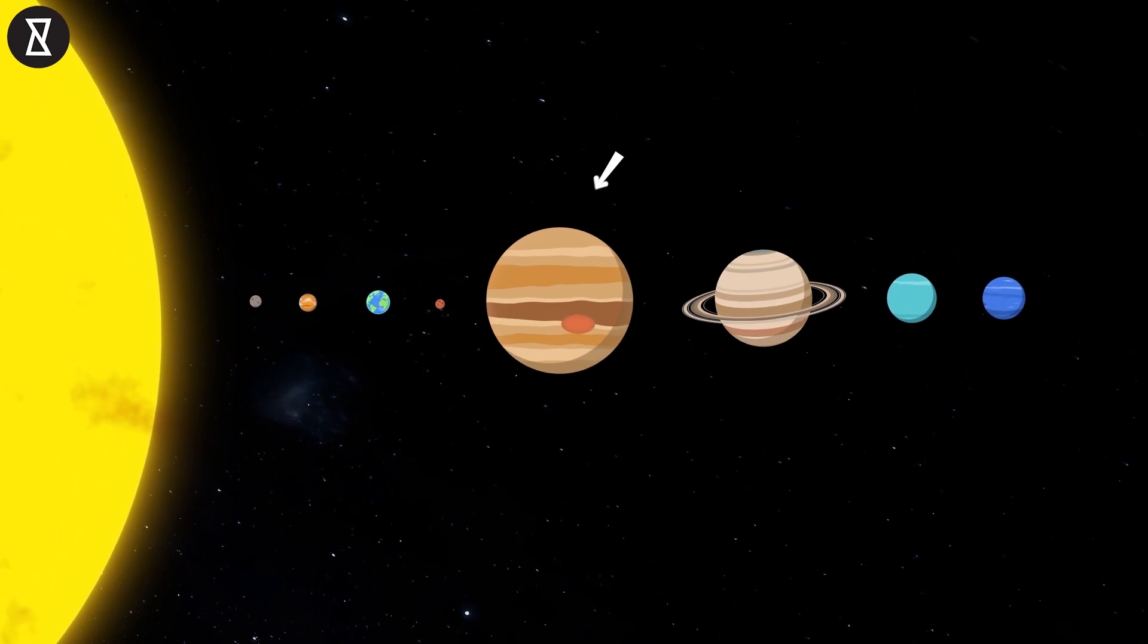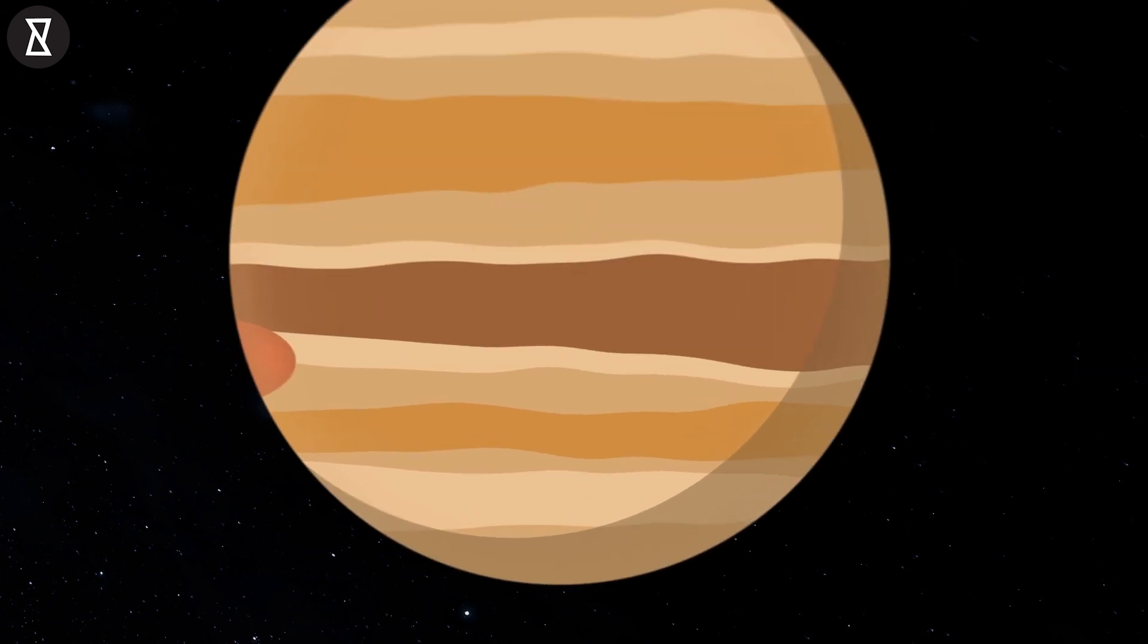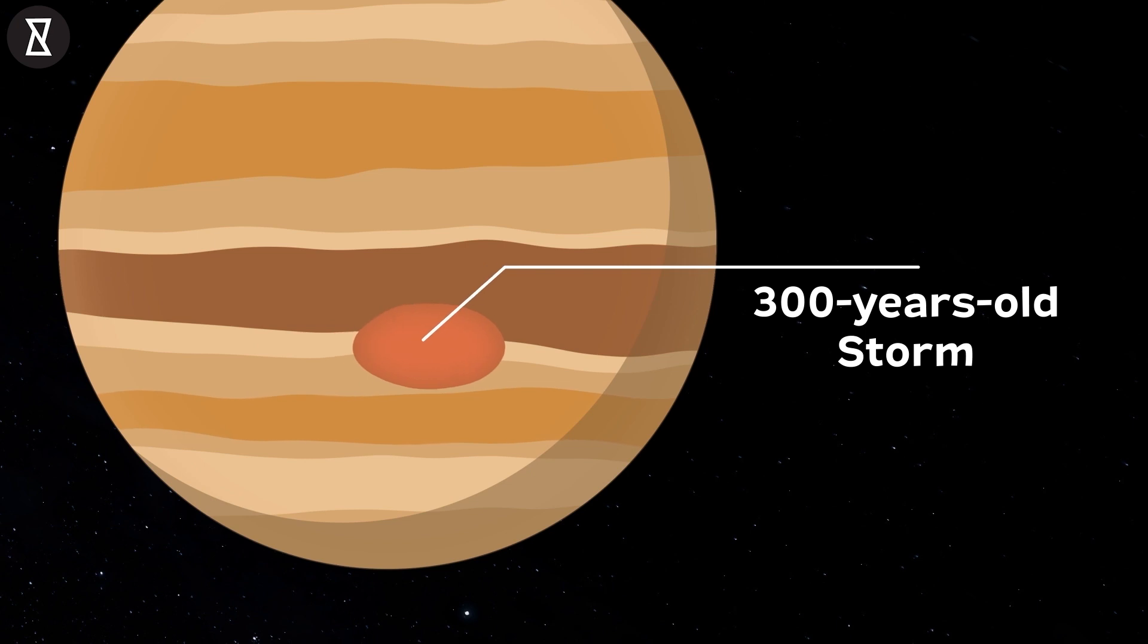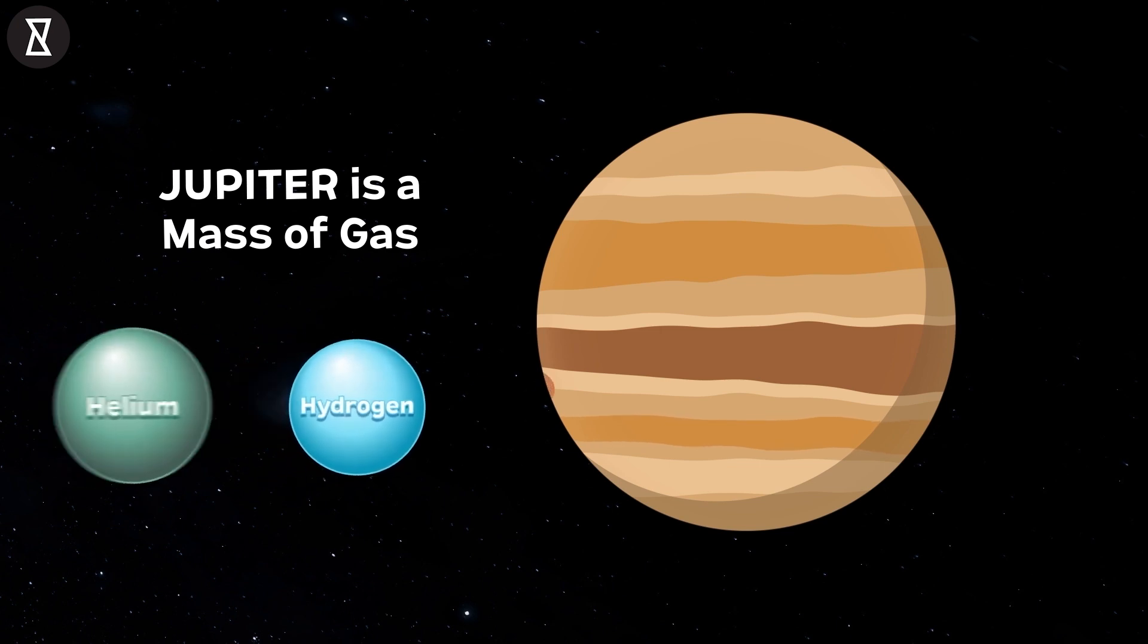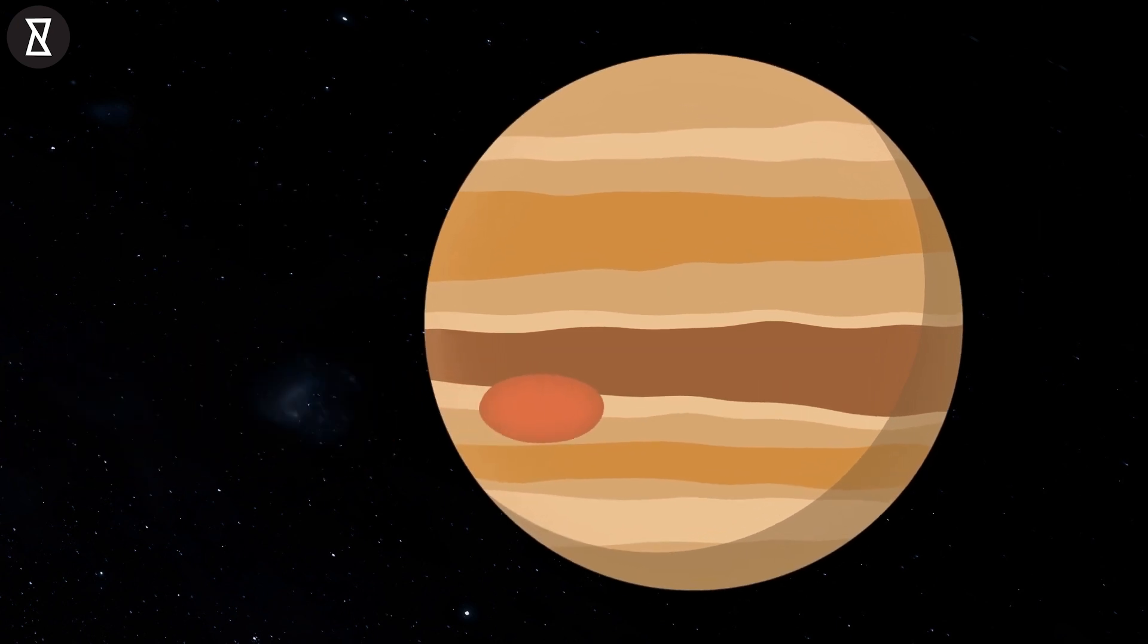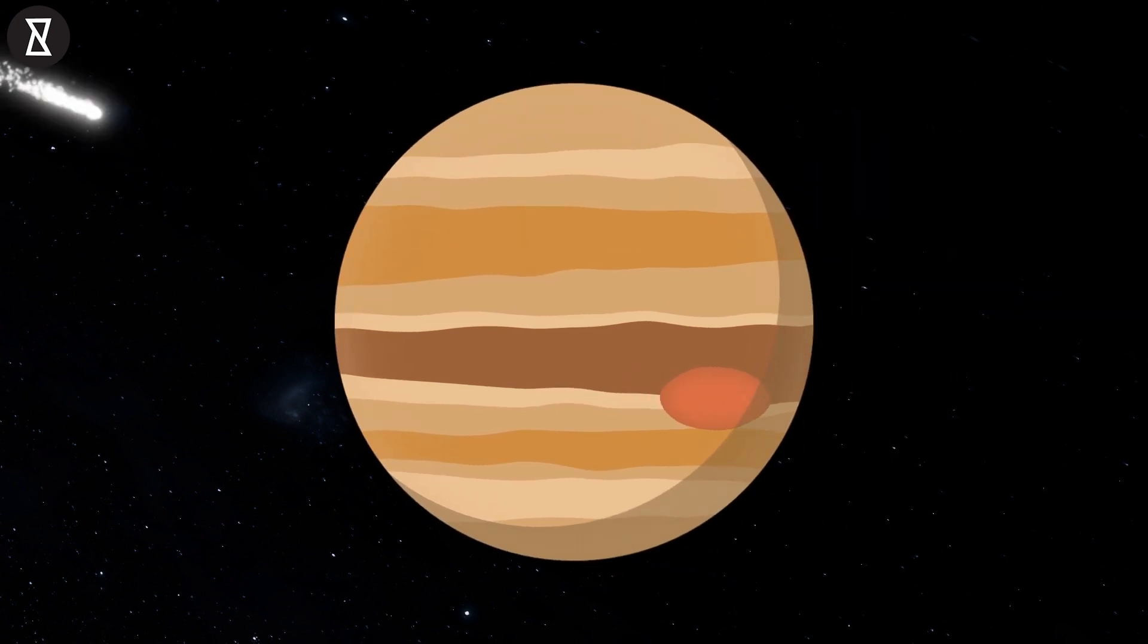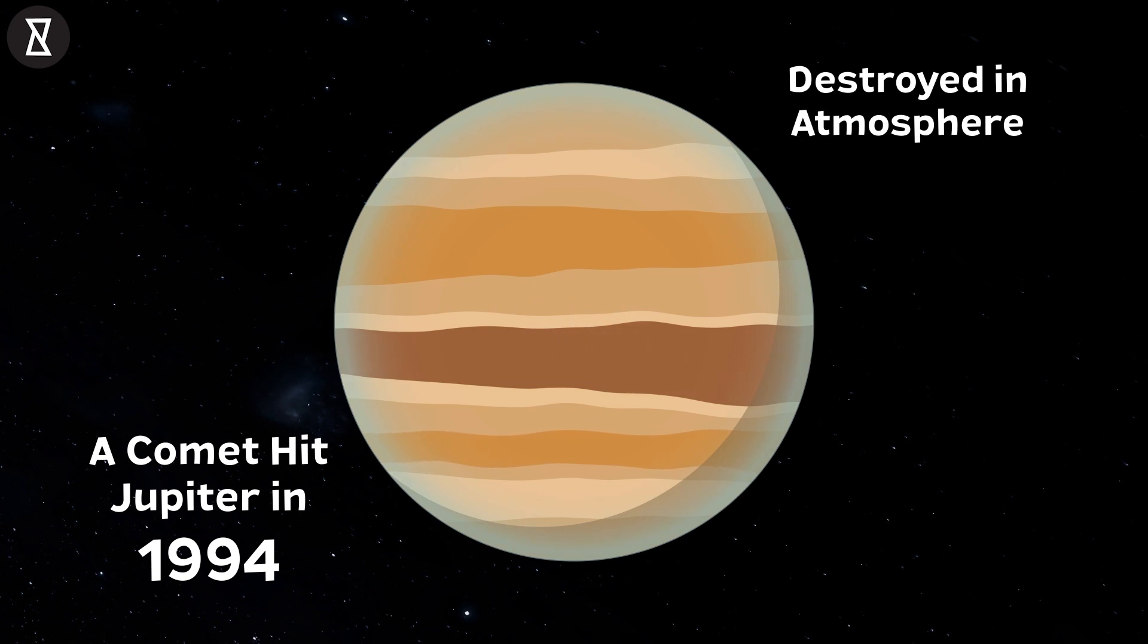Jupiter. Jupiter is the largest planet in our solar system. The diameter of Jupiter is three times the size of the Earth. It has a huge red dot believed to have formed by a storm that lasted more than 300 years. Jupiter is actually a mass of gas consisting of hydrogen and helium. There is a huge ocean of liquid hydrogen on this planet as well. According to the records, a comet hit Jupiter in 1994 and was destroyed in its atmosphere.